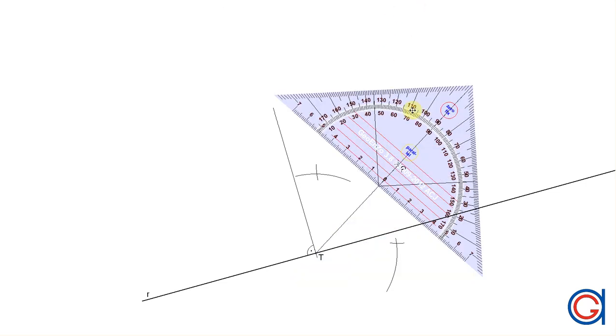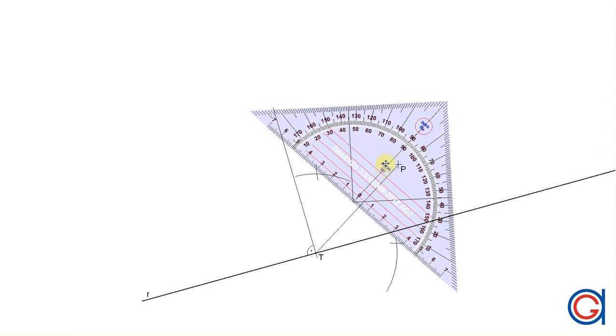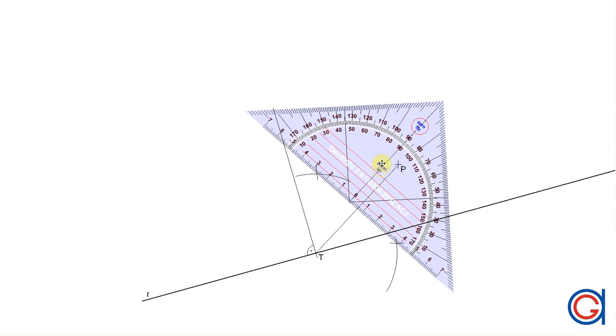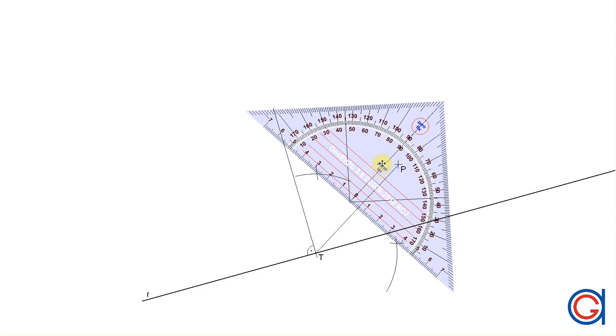So now, with a ruler, we're going to connect these two intersections, which passes through the line segment TP at a midpoint.